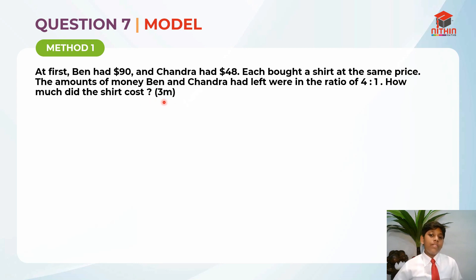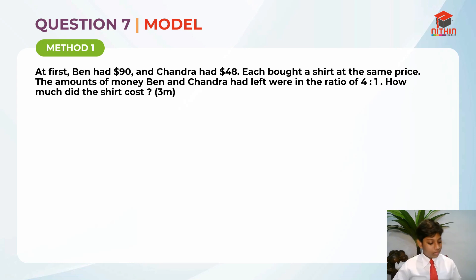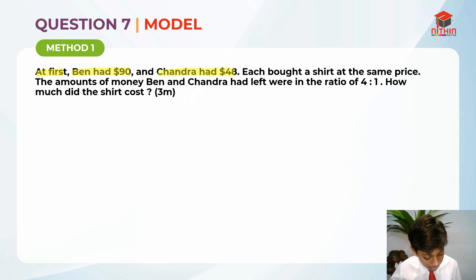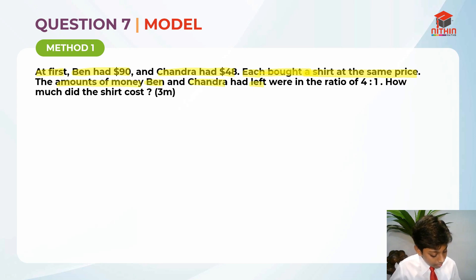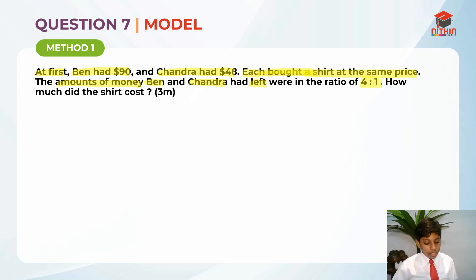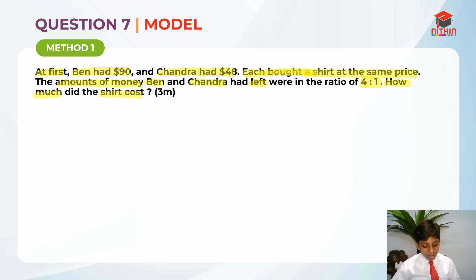This question is worth 3 marks. Since we have read the question, we should underline or highlight the key information — like I always say in all my past videos. Ben had $90 and Chandra had $48. Each of them bought a shirt at the same price. The amounts of money Ben and Chandra had left were in the ratio of 4 to 1. Now we draw the model.